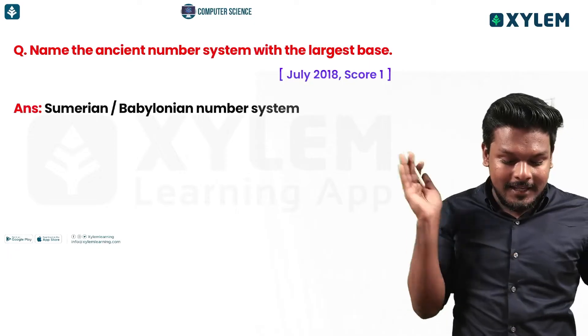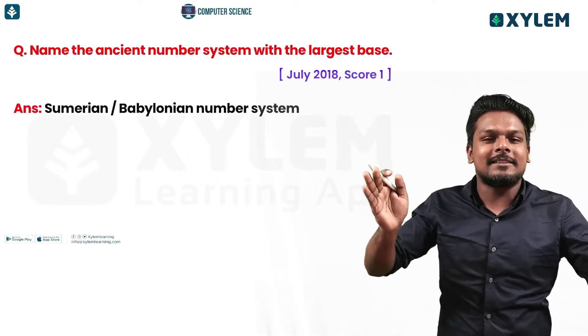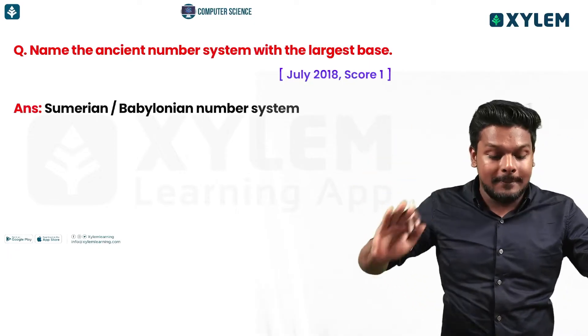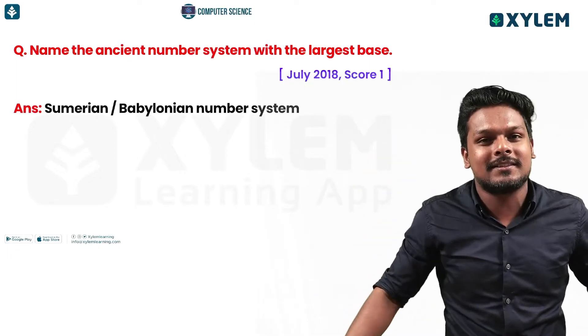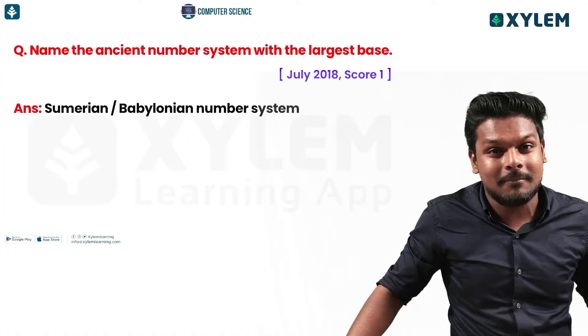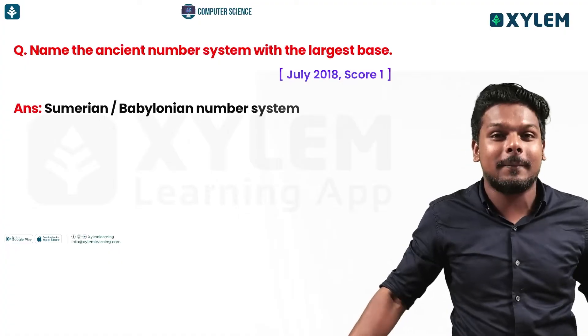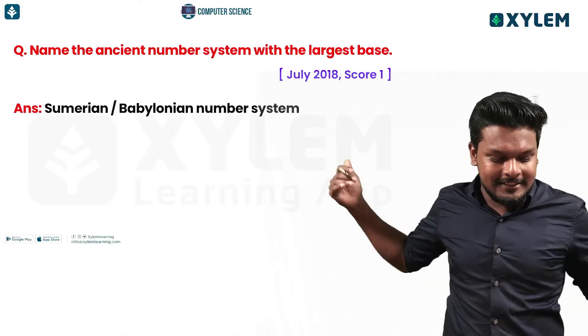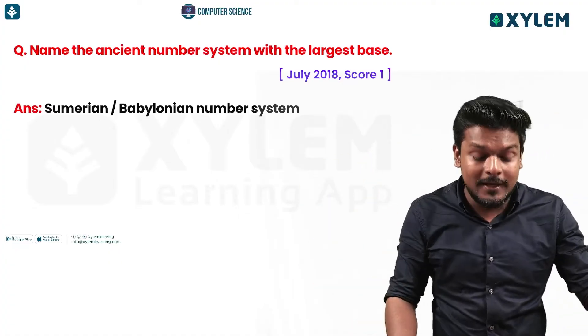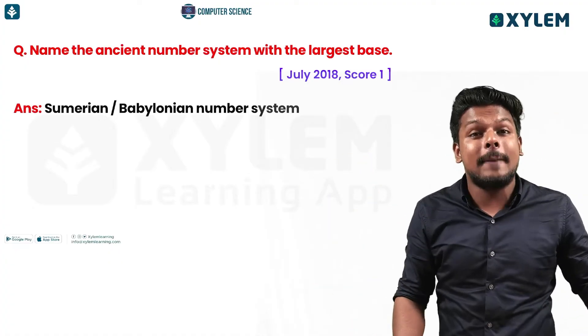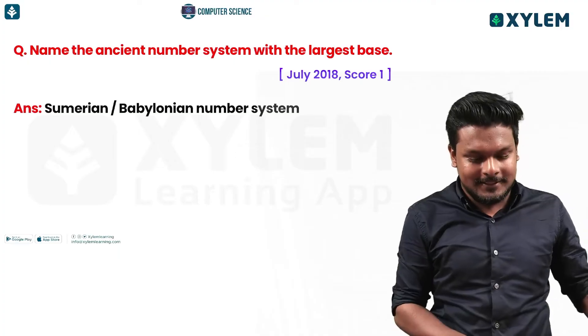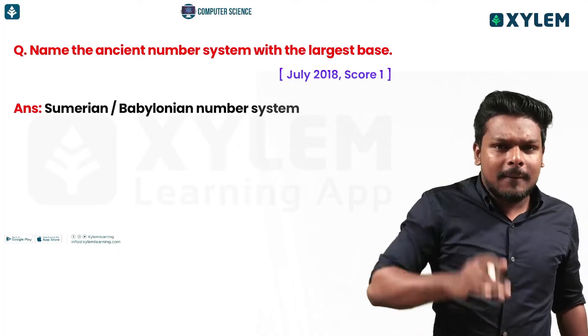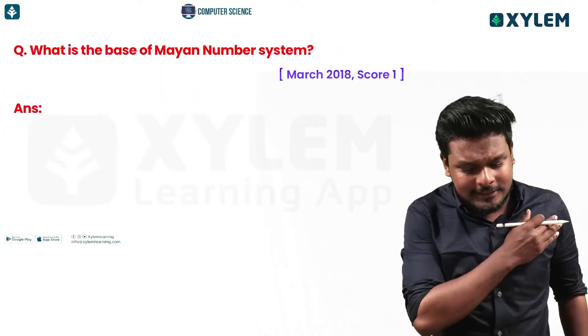The Sumerian number system is the Babylonian number system. Let's go to the next question.